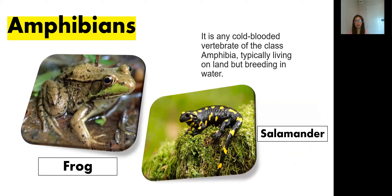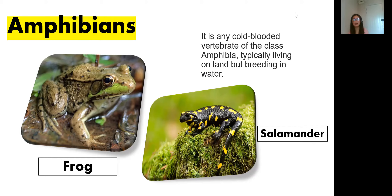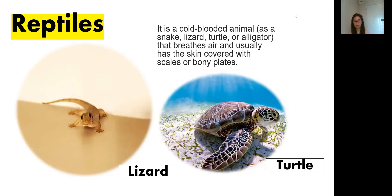Next, amphibians. Please say the word: amphibians. So an amphibian is any cold-blooded vertebrate of the class Amphibia, typically living on land but breeding in water. Again, amphibians live on land but breed in water. These are the examples of amphibians: the first picture is frog, and the second picture is salamander.